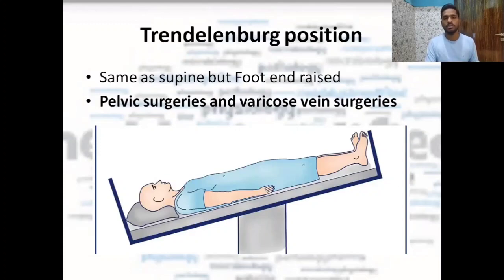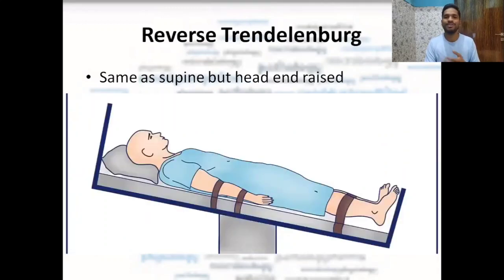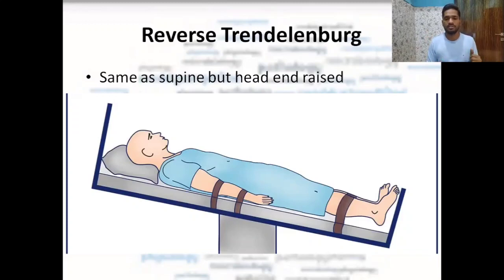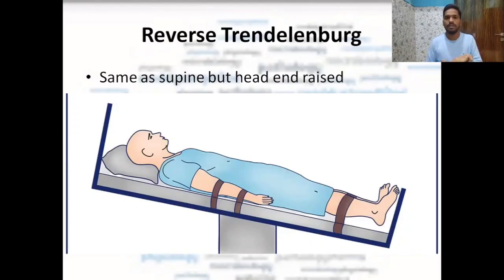The opposite of Trendelenburg is the reverse Trendelenburg position. It is similar to the supine position, but in this case the head end is raised. So to summarize the four positions so far: supine is lying on the back; prone is the opposite; Trendelenburg is supine with the foot end raised; and reverse Trendelenburg is supine with the head end raised.